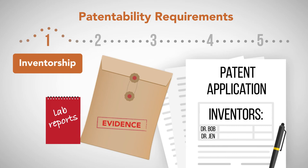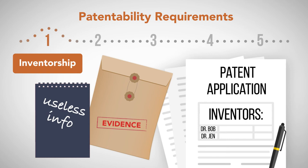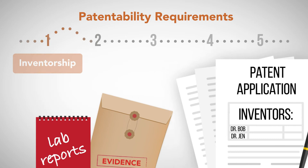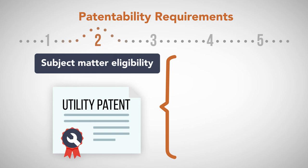A patent application can be denied for improper inventorship designations. In addition, issued patents can be invalidated for improper inventorship, although inventorship can be corrected after issuance. The second requirement is subject matter eligibility. Utility patents only pertain to certain categories of inventions, namely only processes, machines, manufacturers, or compositions of matter, or improvements of any of these categories.